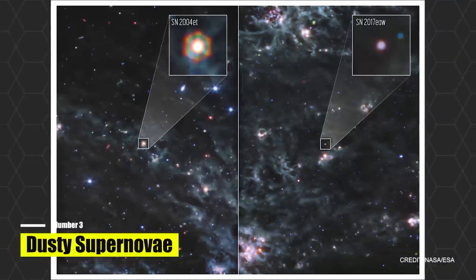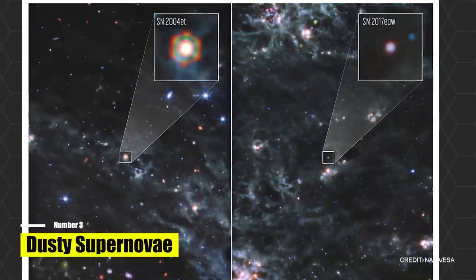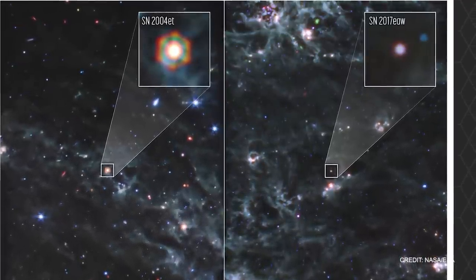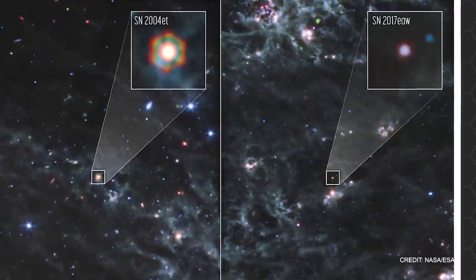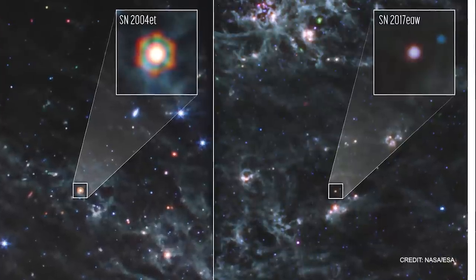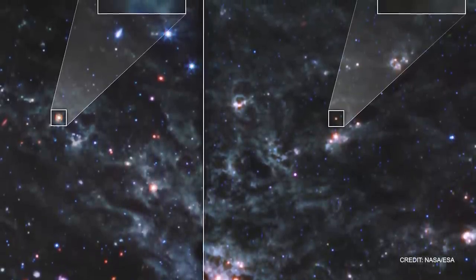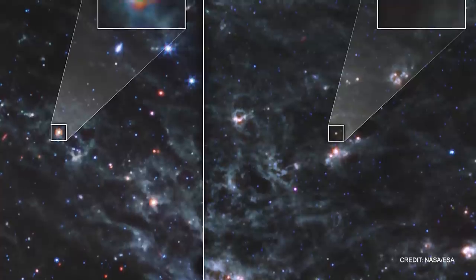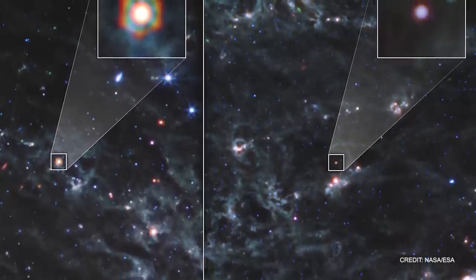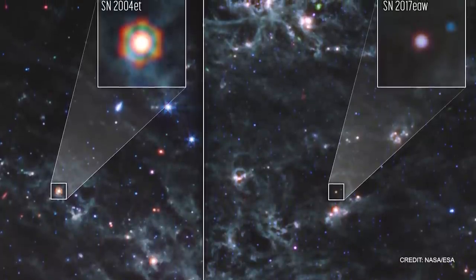Number three, dusty supernovae. Picture this cosmic drama, far away in the depths of the universe, unveiling itself for the curious human eye. Within the boundless dark canvas of the cosmos, in a spiral galaxy we call NGC 6946, lie two central characters of our narrative, the supernovae SN 2004 AT and SN 2017 EAW. But how do we perceive this distant narrative taking place 22.5 million light years away from Earth? The answer lies with NASA's innovative and groundbreaking James Webb Space Telescope, and more specifically its integral component, MIRI, the mid-infrared instrument.